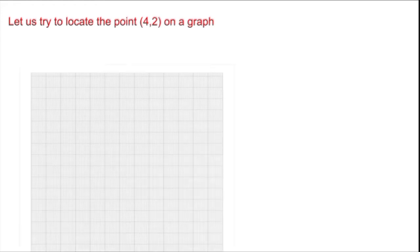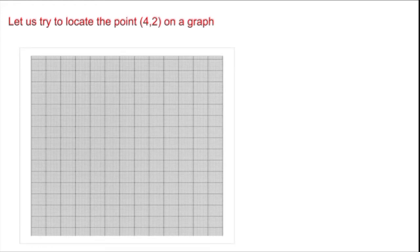Let us move into another one. Let us try to locate the point (4,2) on a graph on a Cartesian system of a plane. Here is the graph. And horizontal line is called X-axis and vertical line is called Y-axis. Now center intersecting point is O.